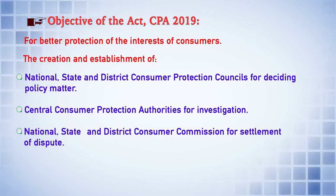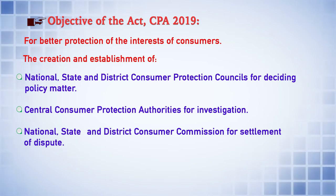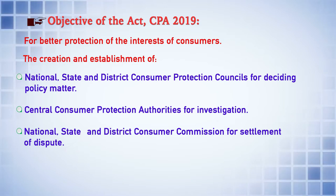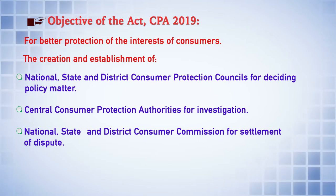The third institutional mechanism provided under the law is the establishment of National, State, and District level Consumer Commissions for the purpose of settlement of disputes. Again, we have the three-tier structure: the National Consumer Disputes Redressal Commission at the national level, the State Consumer Disputes Redressal Commission at the state level, and the District Consumer Commission at the district level. So one is for policy matters (councils), second for investigation (the authority), and third for settlement of disputes (the commissions).